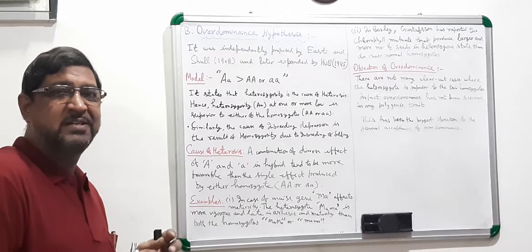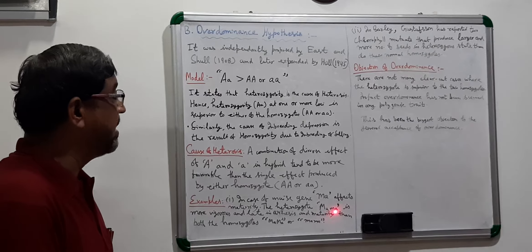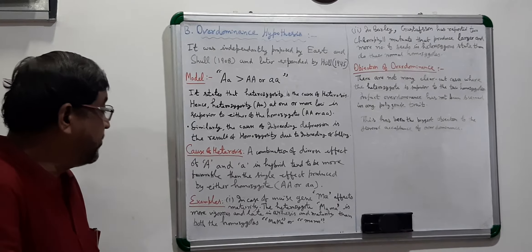Let us look at one or two examples. In the case of maize, there is a gene named 'ma' (small ma) which affects the maturity of the plant. The heterozygote, capital ma small ma, in heterozygous condition is more vigorous and late in anthesis as well as maturity, as compared to both its homozygotes — capital ma capital ma or small ma small ma. This is put forward as one of the examples of the Over Dominance Hypothesis of heterosis.